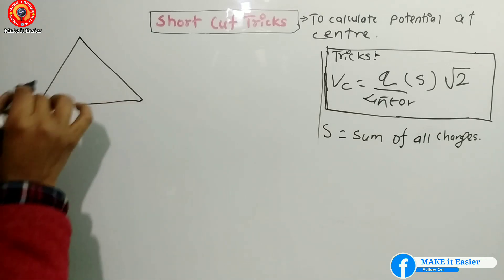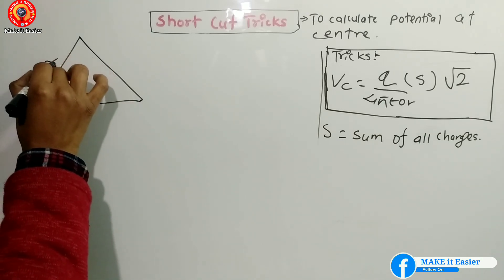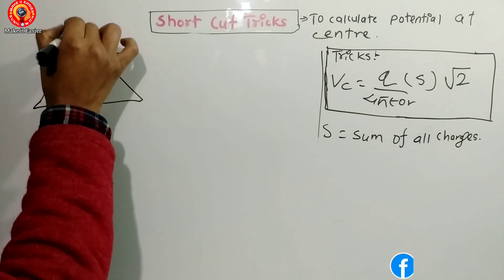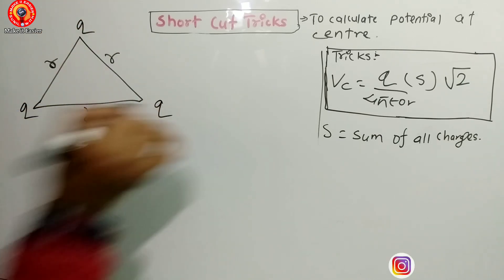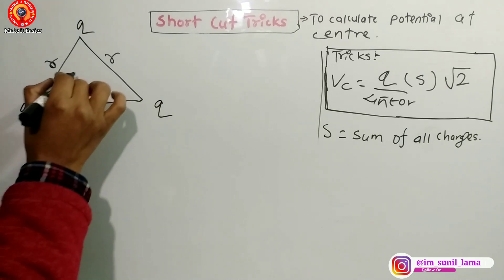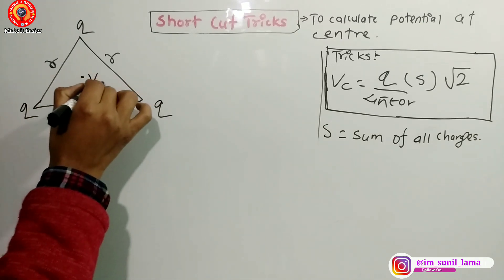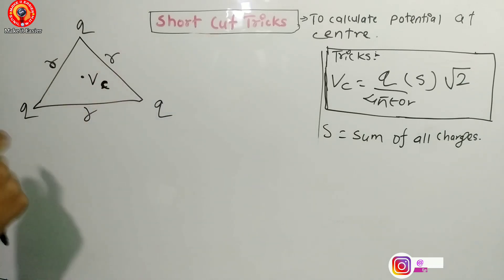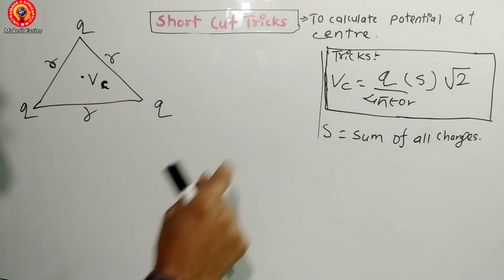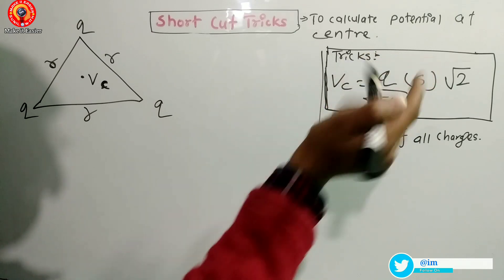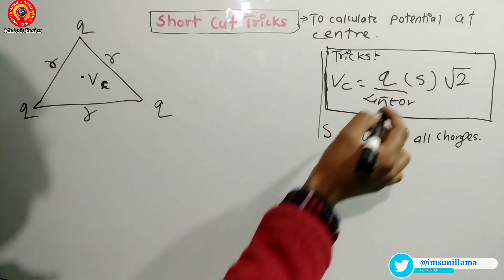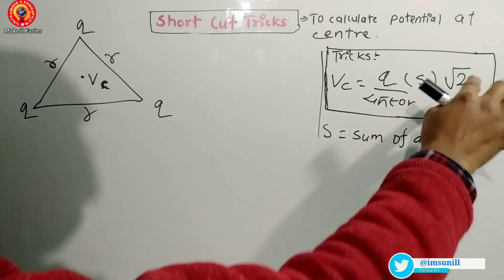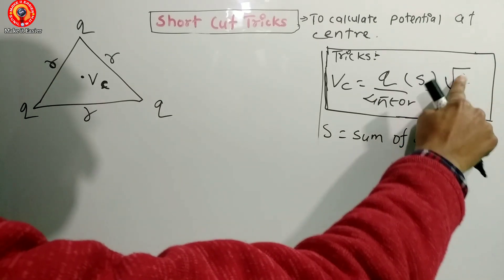Suppose the side length is r. Charges at the corners are q, q, q. We want to find the potential at the center. Using the trick: V = q/(4πε₀r), and for the equilateral triangle the factor includes root two going down — simply root three.